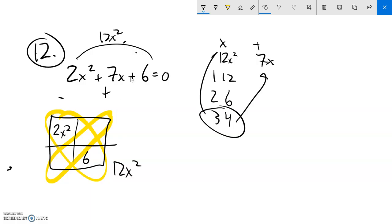So that means that I'd have a 3x and a 4x. Notice how 3x times 4x is 12x squared. 3x plus 4x is 7x.